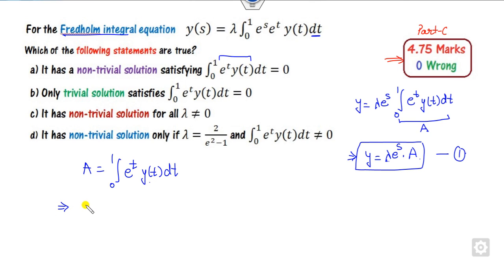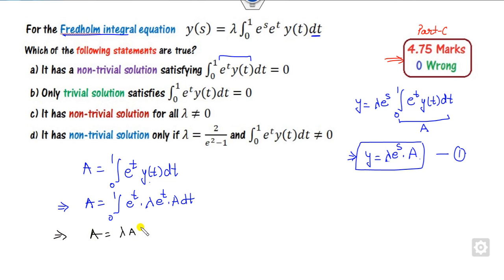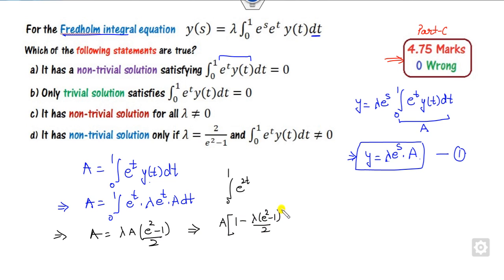So y = λ e^s · a, where a = ∫₀¹ e^t y(t) dt. Substituting the value of y to find a: this becomes ∫₀¹ e^t · λ e^t · a dt. Solving, since λ and a are constants, this is λa ∫₀¹ e^(2t) dt. Integrating from 0 to 1 gives a specific value. So we get a(1 − λ · [value]) = 0.